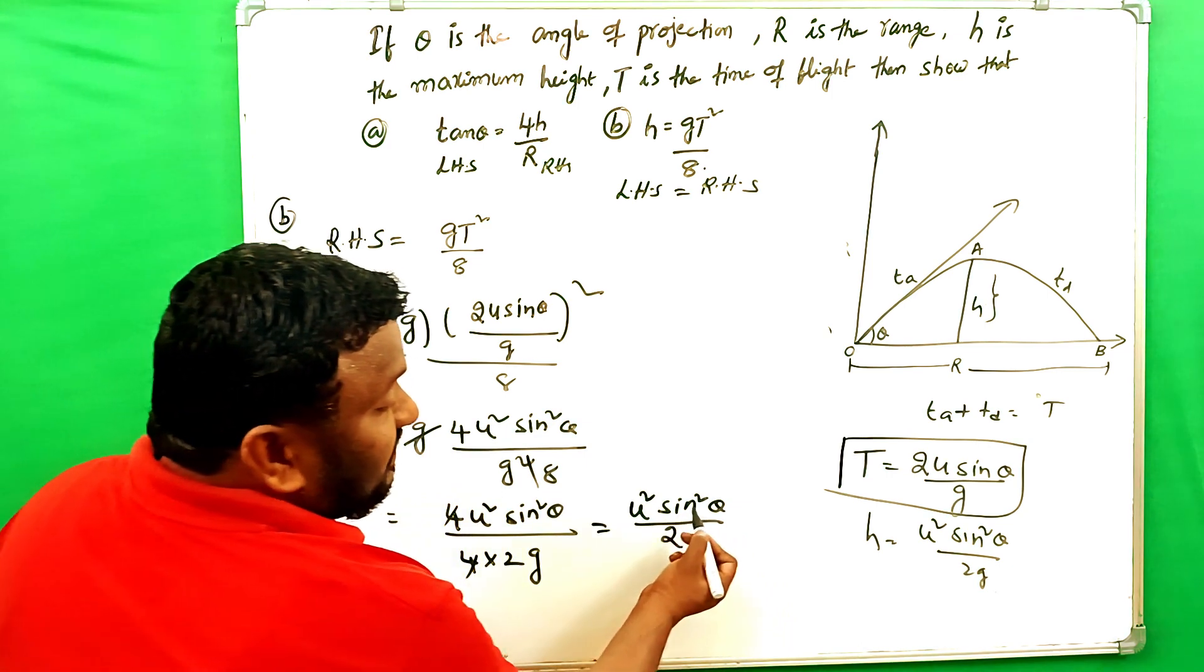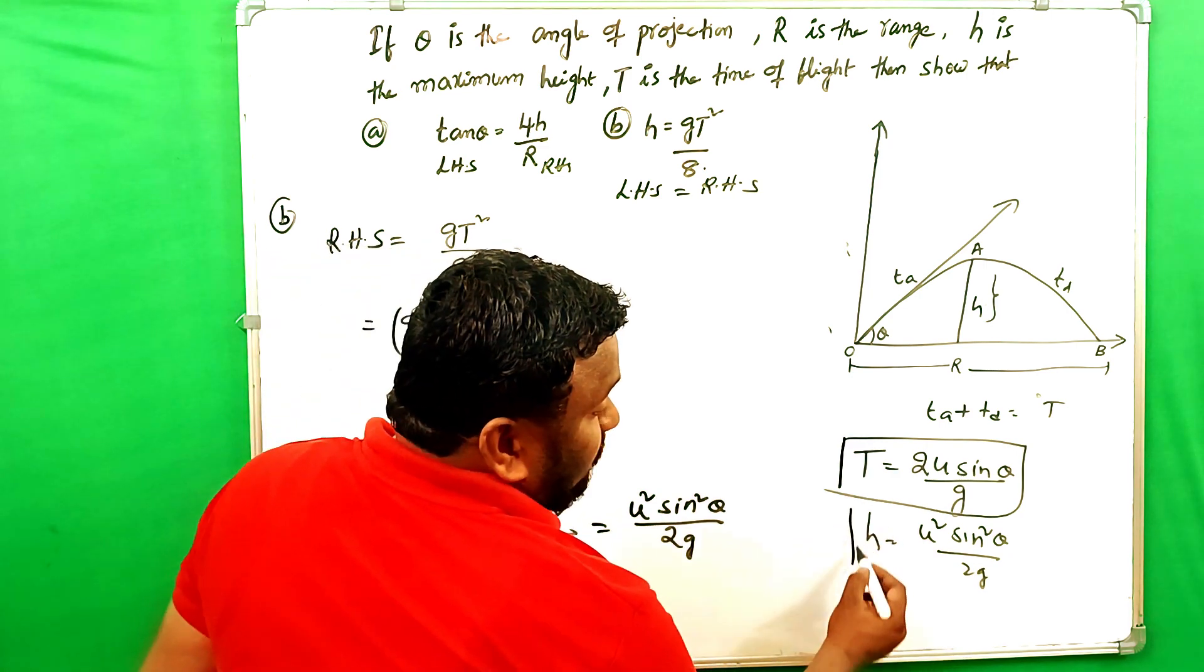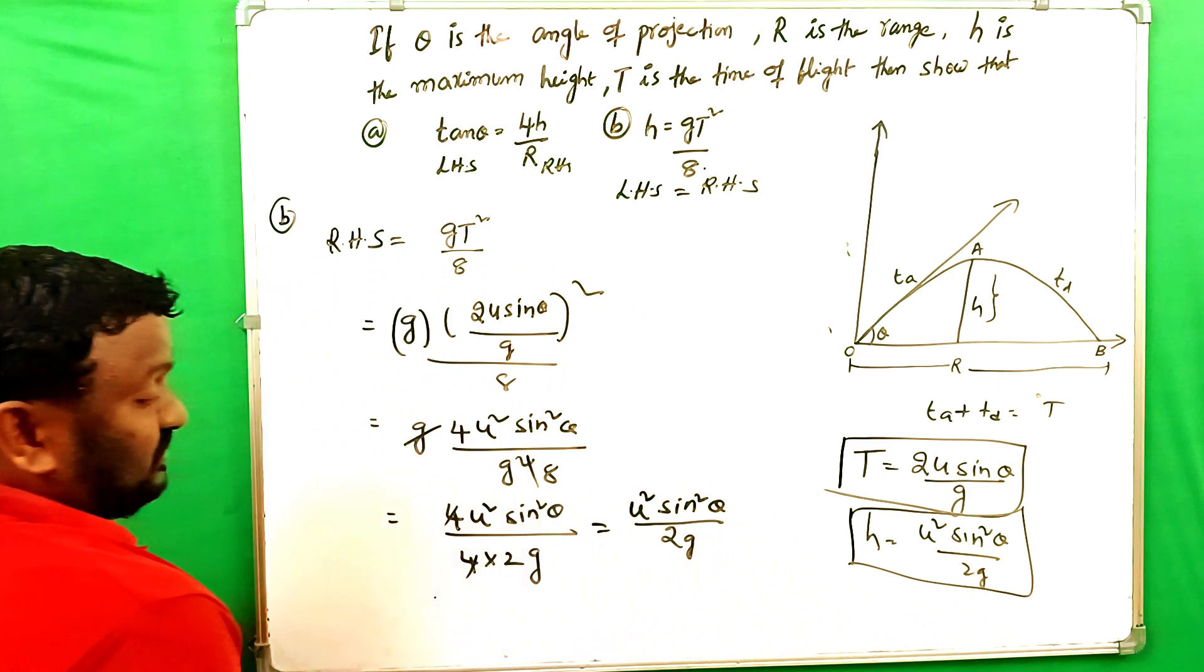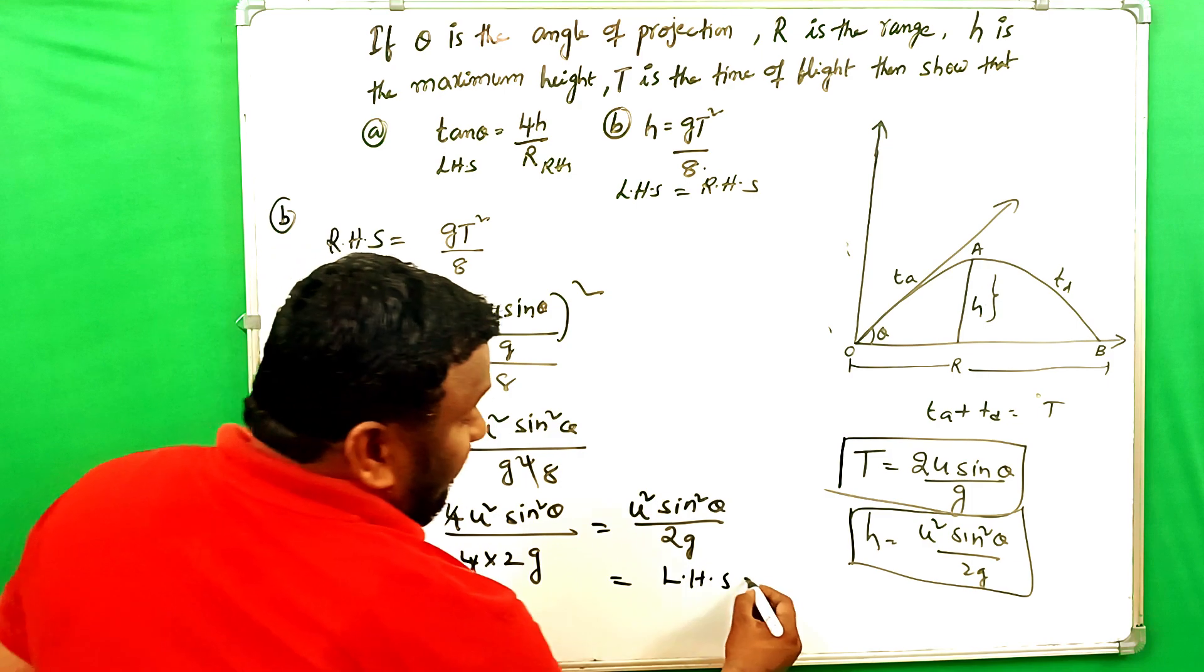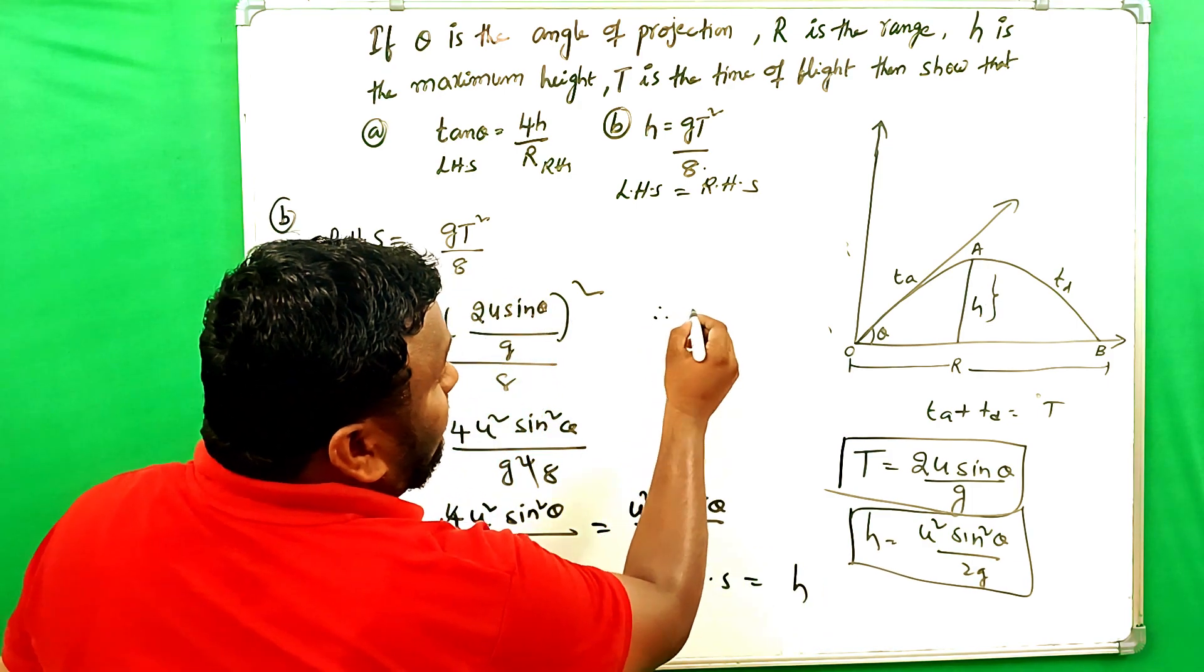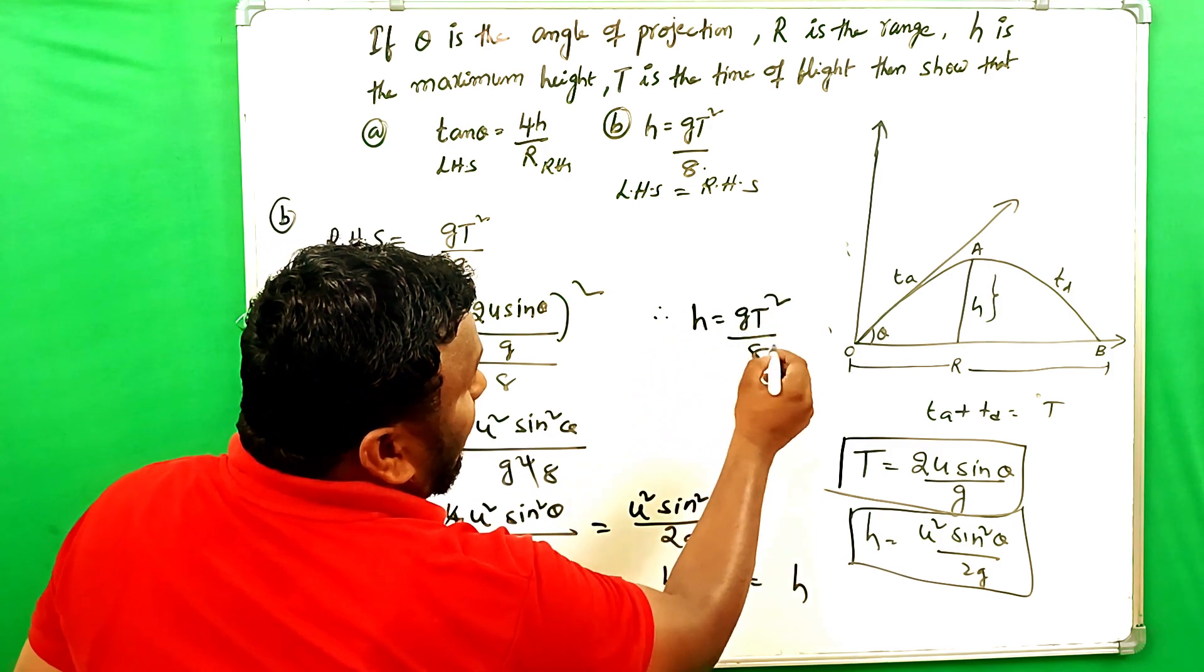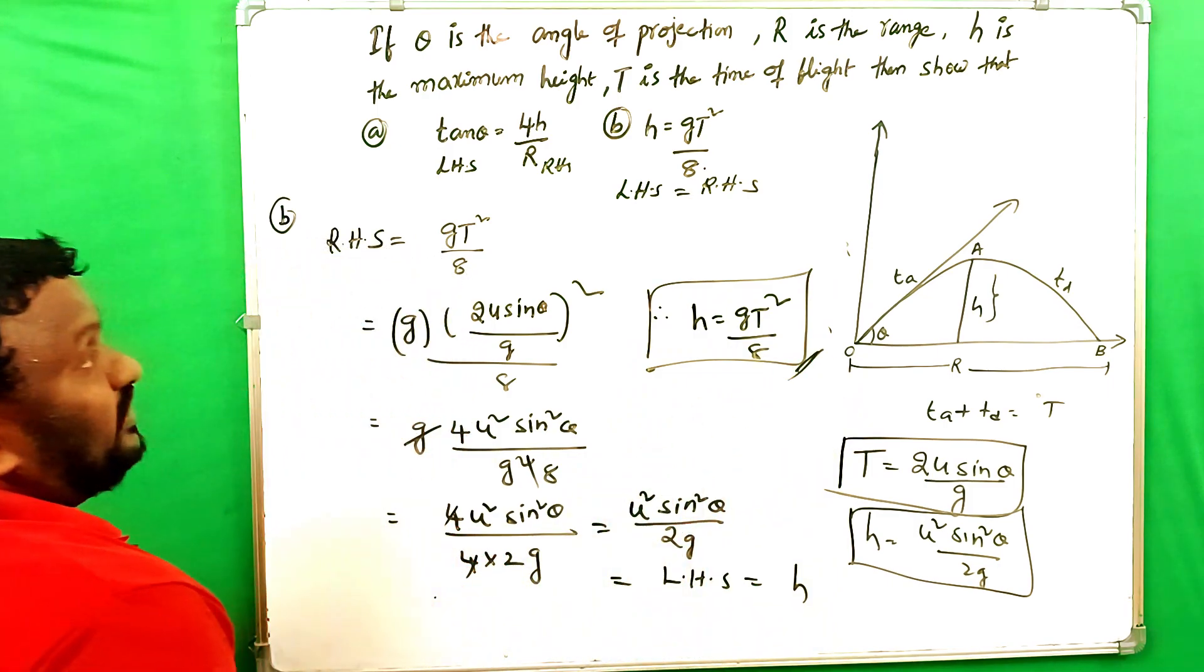U square sine square theta by 2G. What is that? H is equals to U square sine square theta by 2G. So this is LHS and equals here H. Therefore, H is equals to G into T square by 8. So we proved. Okay.